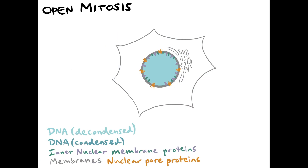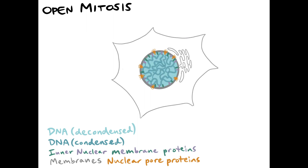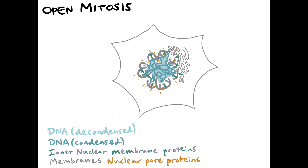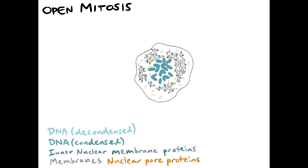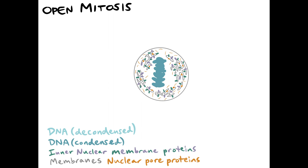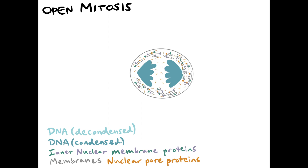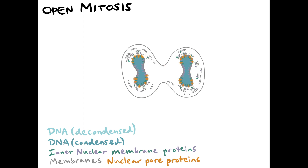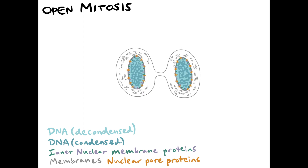Nuclear compartmentalization is lost at the onset of mitosis when the nuclear membrane and the proteins embedded within redistribute to the mitotic endoplasmic reticulum. At the same time, soluble proteins such as NUP-153 are released into the cytoplasm. After DNA is partitioned between the two daughter cells, the nuclear envelope must reform from the endoplasmic reticulum.